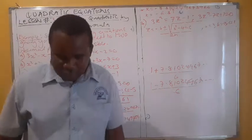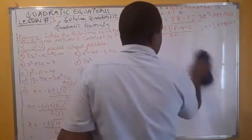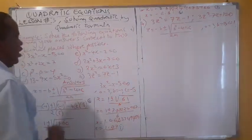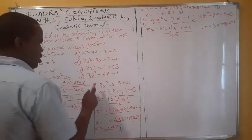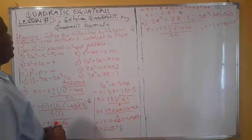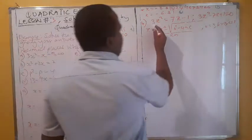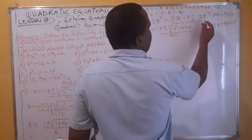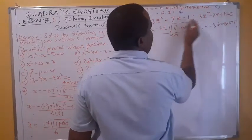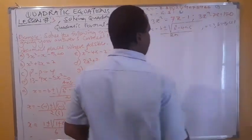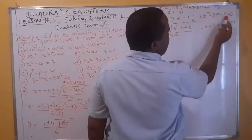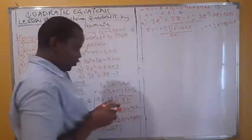Now I'll do the second example, then the rest you will do yourself — the approach is the same. Question h: 3z² = 7z − 1. This must be rewritten in standard form. Rearranging: 3z² − 7z + 1 = 0. From there we identify the constants: a = 3, b = −7, c = 1, and then we substitute.